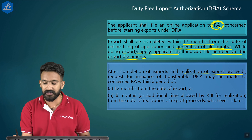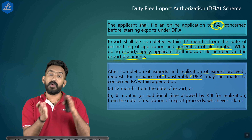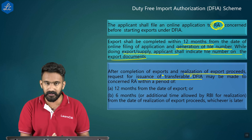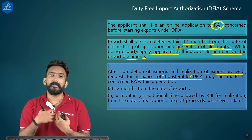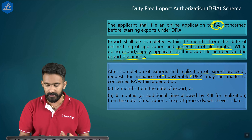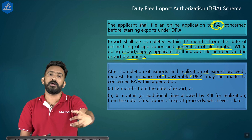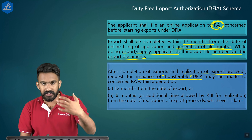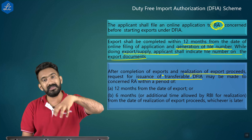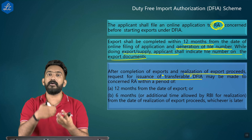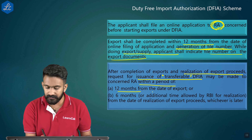After completion of the export and realization of export proceeds, a request for a transferable DFIA can be made. Note the key word: transferable. The Advanced Authorization is not transferable, but after completing the export and receiving the proceeds, you can apply for a transferable Duty Free Import Authorization. The procedure is: apply to the regional authority, complete the export, mention the file number on export documents, realize export proceeds, then apply to get the transferable DFIA.